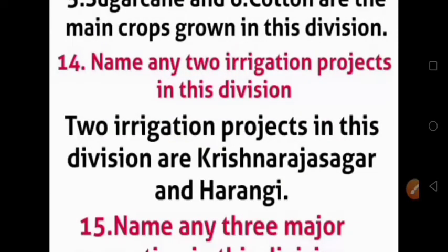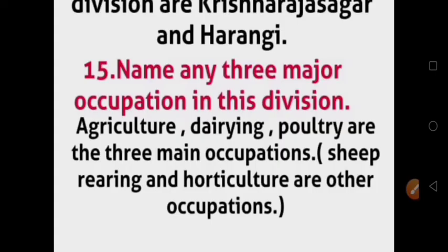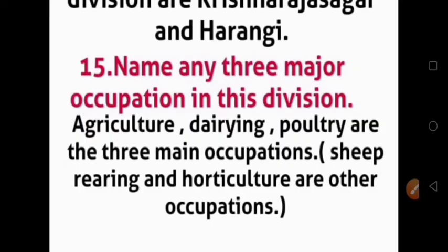The 2 irrigation projects in this division are Krishna Rajasagara and Harangi. Name any 3 major occupations in this division. Agriculture, dairying, and poultry are the 3 main occupations.